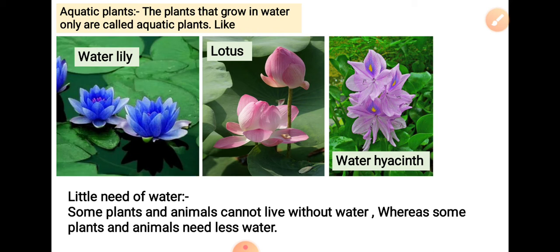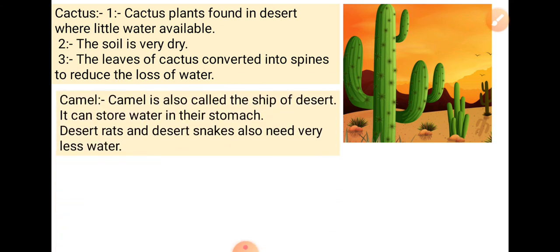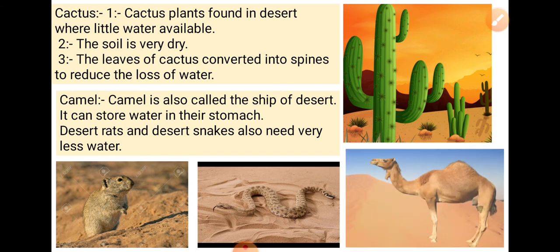Some plants and animals cannot live without water, whereas some plants and animals need less water. They can survive without water for many days. Like cactus — a plant found in the desert where little water is available and the soil is very dry. The leaves of cactus convert into spines to reduce the loss of water. Camel is also called the ship of the desert and can store water in its stomach. Desert rats and desert snakes also need less water.